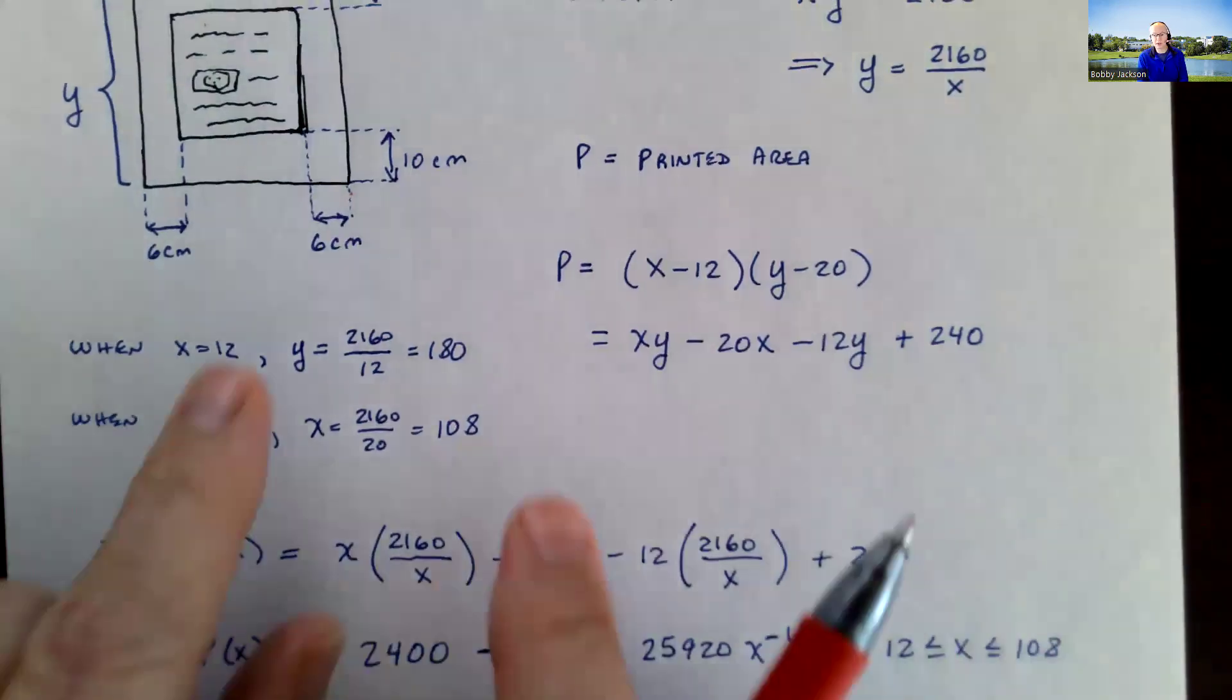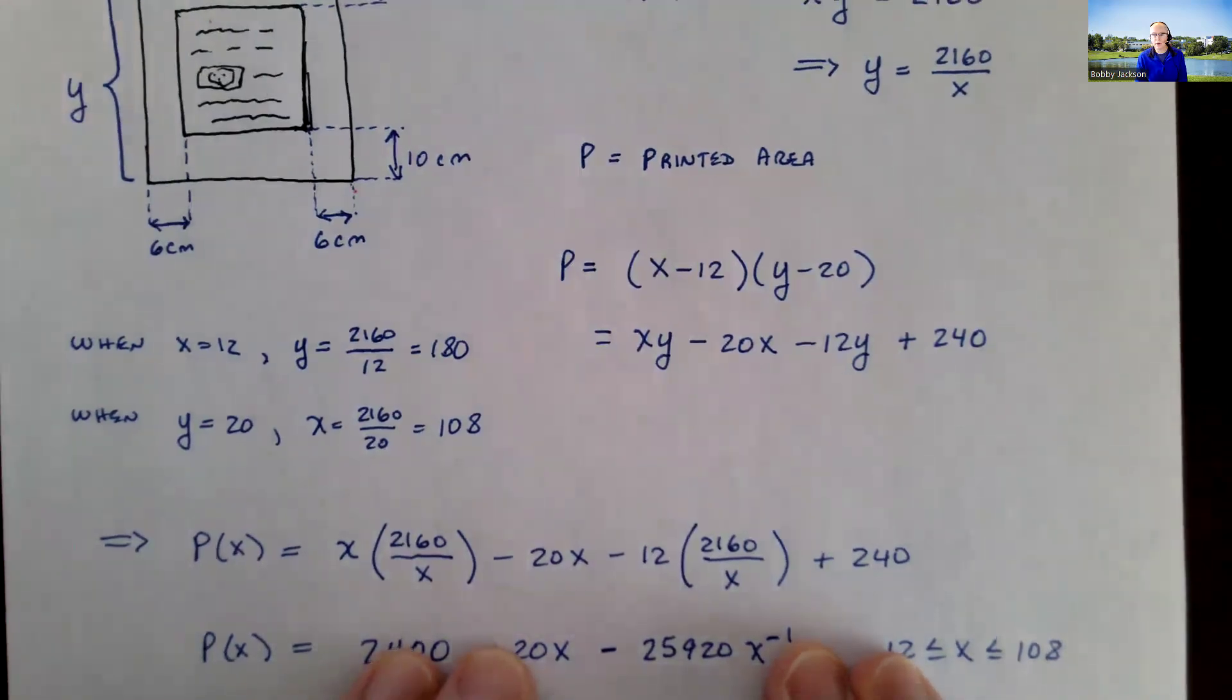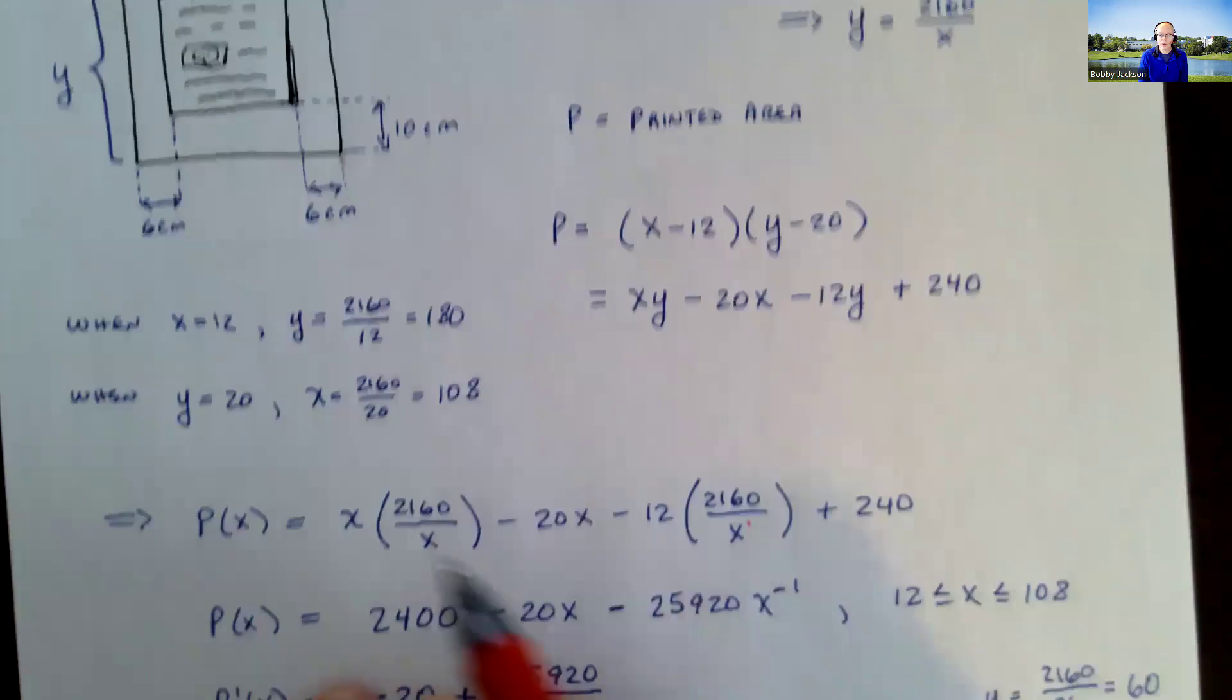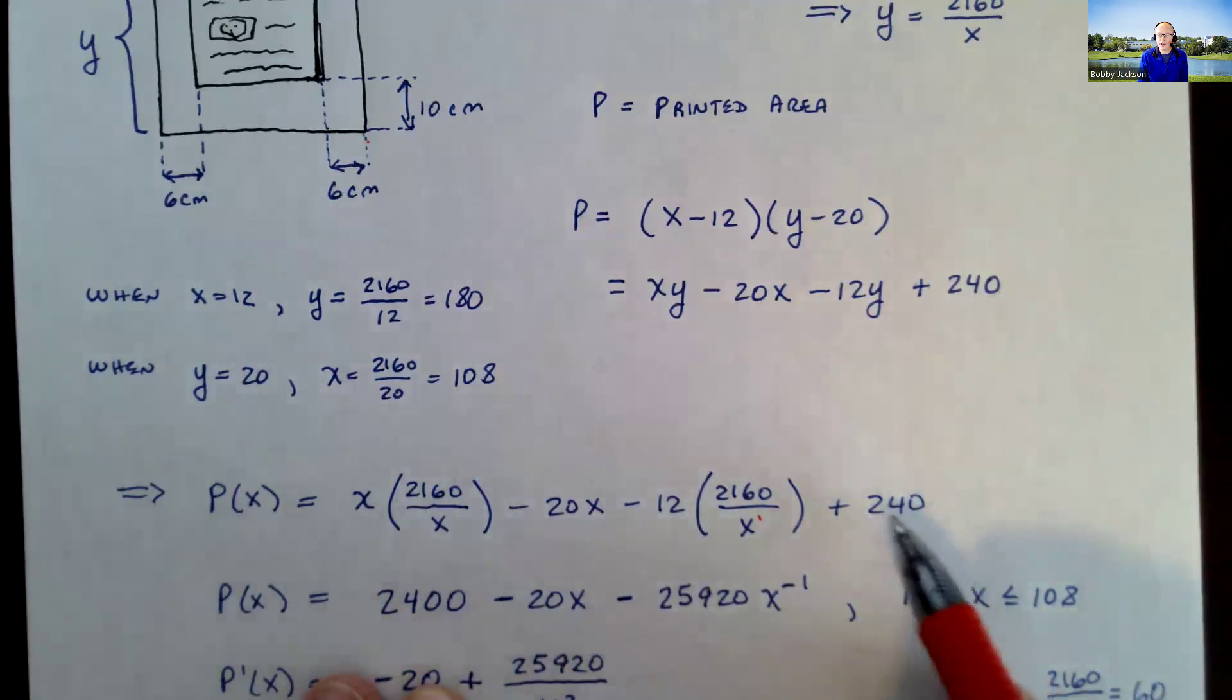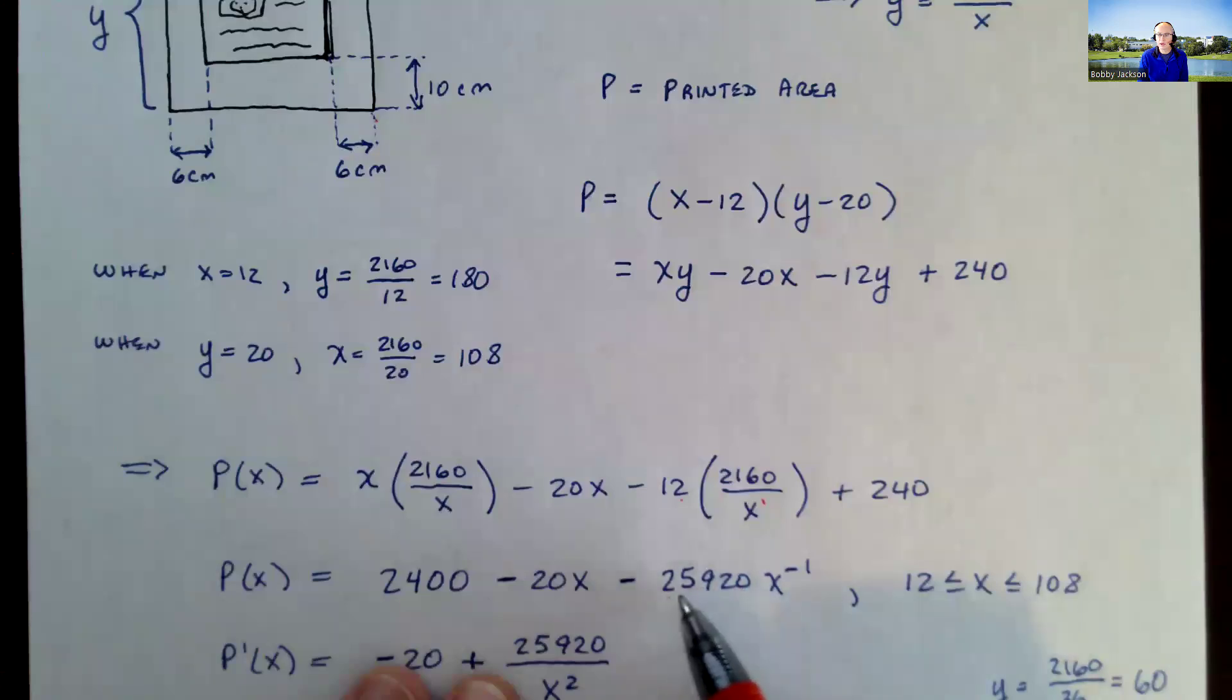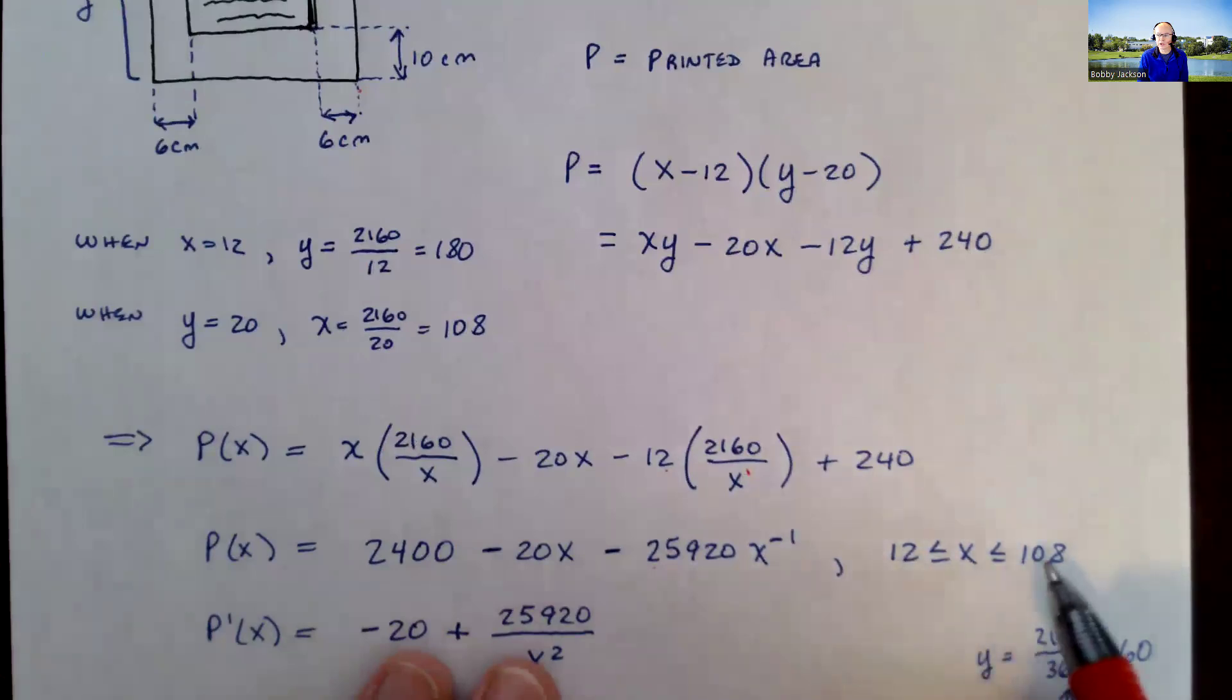We know the printed area is zero at these endpoints. And so we're just going to find the critical point, check the value of the critical point, and that should give us the maximum. So plugging in y is 2160 divided by x here and here gives me this. Of course, simplifying, x times this is just 2160, and I'll go ahead and add the 240 to that. 2160 plus 240 is 2400. So I've got that. And then 12 times 2160 is 25,920. It'll be all divided by x or times x to the negative 1. And remember, this is the restriction, as we talked about, on x. So how do we maximize this function on this closed interval?